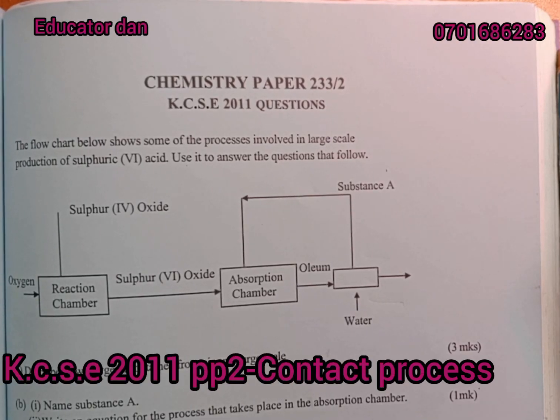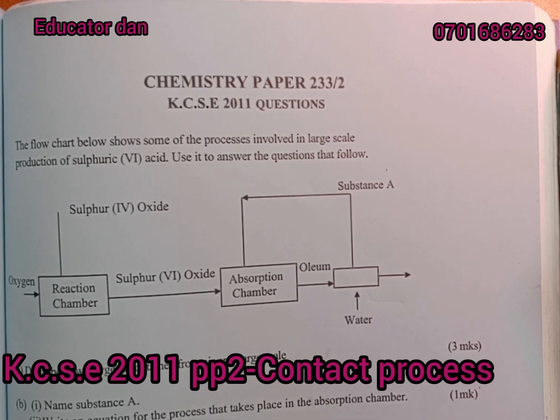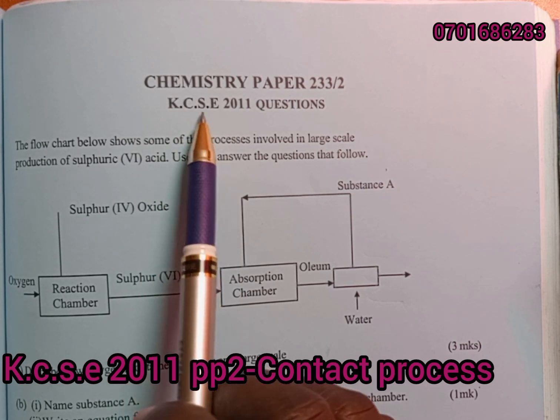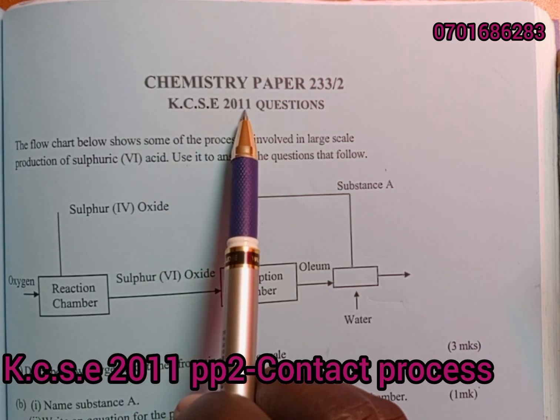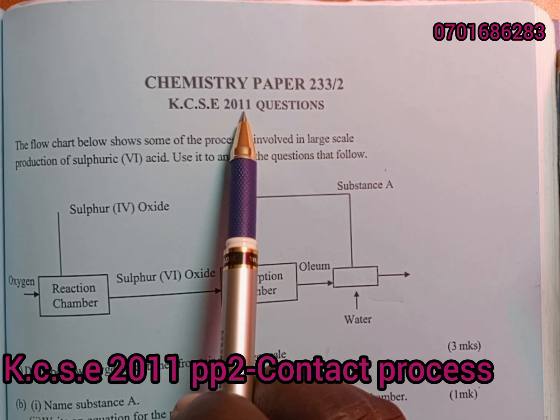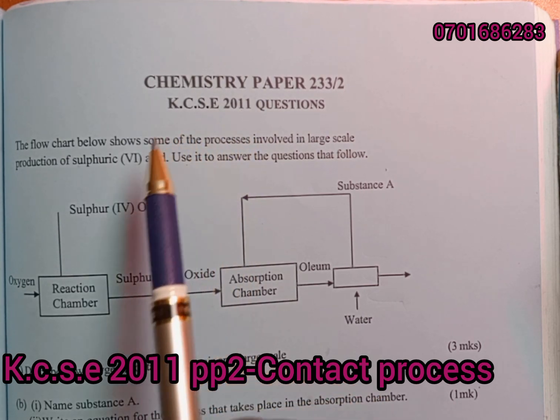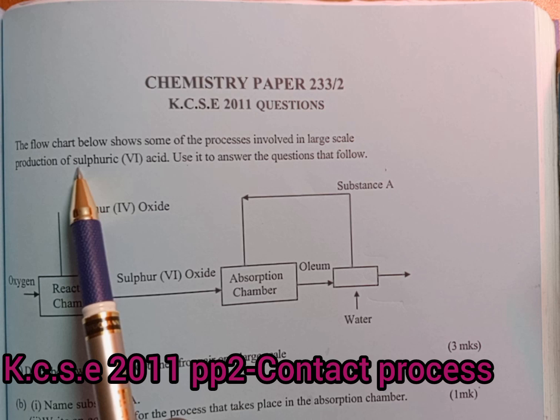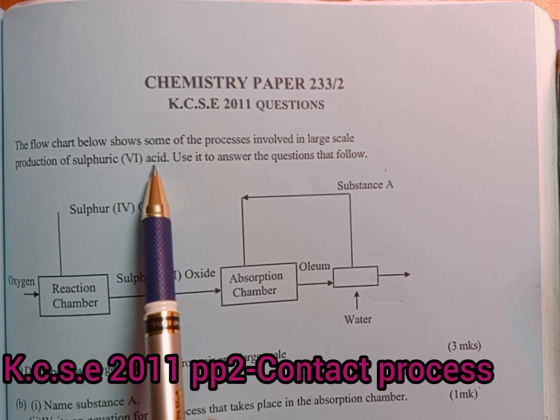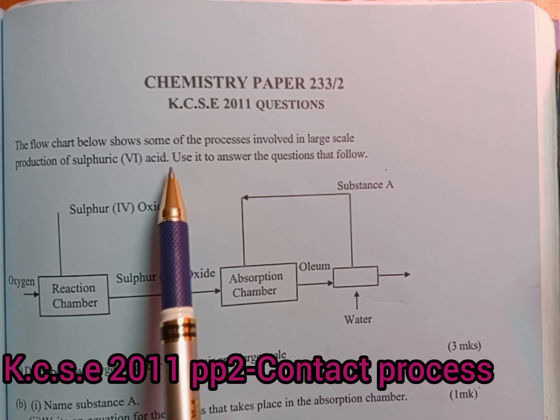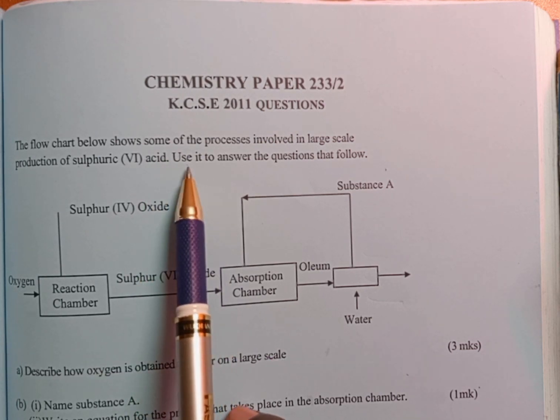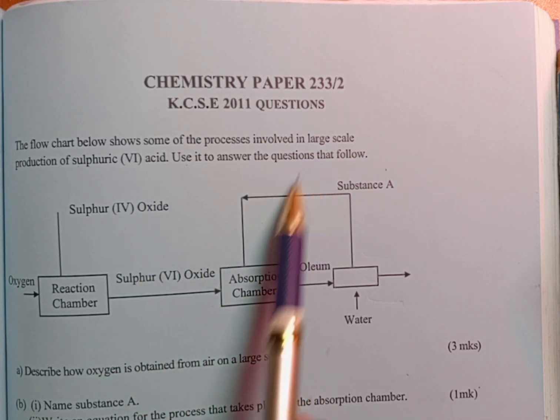Welcome and thank you for always joining us. We are presenting a question in KCSE 2011 Chemistry Paper 2. The question is on the production of sulfuric acid. We are supposed to study the flowchart given and then use it to answer the questions that follow.